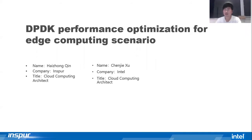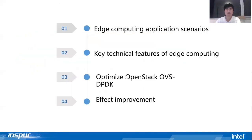Hello, everyone. I'm Qin Haizhong from ISPR. I'm a cloud computing network architect. I am mainly engaged in the design and development of OpenStack control planes and high-performance network solutions. I will share the performance optimization of DPDK for edge computing scenarios, along with Xu Chenjie from Intel, covering virtualization and container aspects. First, I will share DPDK performance optimization for edge scenarios from the virtualization direction.